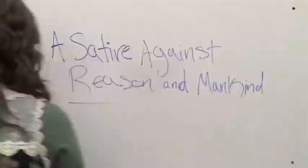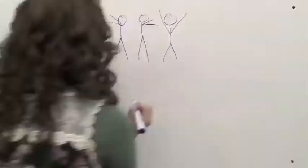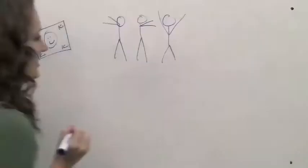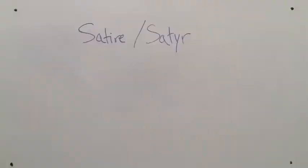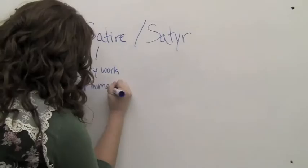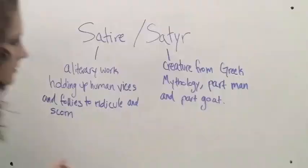Next up is a satire against reason and mankind by John Wilmot, 2nd Earl of Rochester. Wilmot, or Rochester as he is more commonly referred to, was by all accounts extravagant, wild, and prone to drunkenness. His works are known for their extreme satire, and a satire against reason and mankind fits that description to a T. Rochester actually published this poem, both as a satire against reason and mankind, and a satire against reason and mankind. Now, a satire is a literary work holding up human vices and follies to ridicule and scorn. But a satyr is a creature from Greek mythology that's part man and part goat.